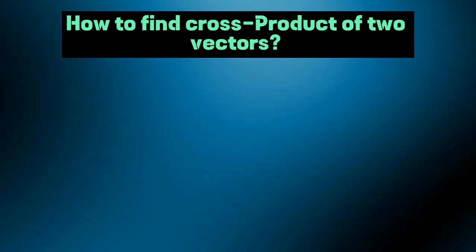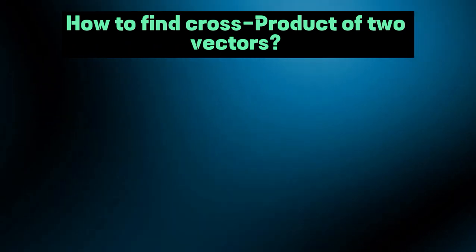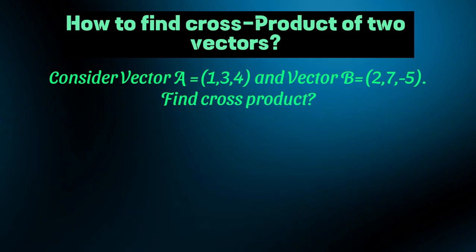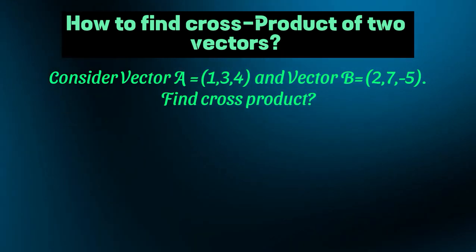How to find cross product of two vectors? Let's solve one of the example. Consider vector a equals 1, 3, 4 and vector b equals 2, 7, negative 5. Find a cross b.